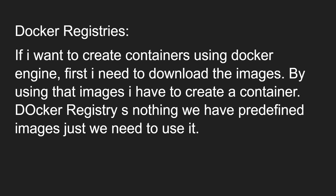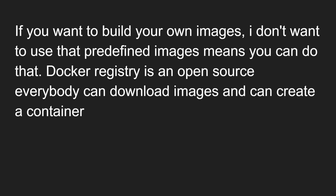The last component is Docker registries. If you want to create a container using the Docker engine, first you need to download the images. Using the image only, you can create a container — without an image, you cannot create a container. Docker registry is nothing but predefined images; you just need to use them. Think of Docker registry as hub.docker.com, similar to the NPM registry where all public NPM packages are available. You can pull public Docker images and use them. If you want to build your own custom images instead, you can do that too using Docker.